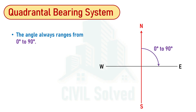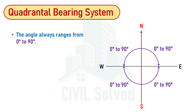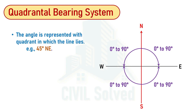If the angle is measured from north to east, it would be from 0 to 90 degrees. If the line exceeds 90 degrees, it would be in the southeast quadrant, and south would be nearer to that line, so the bearing would be measured from south. In the northwest quadrant, the angle is always 0 to 90 degrees, and the same is the case in the southwest quadrant. The angle is represented with the quadrant in which that particular line is lying.